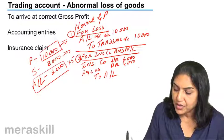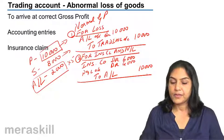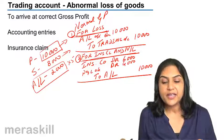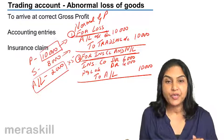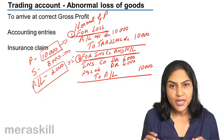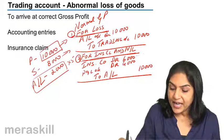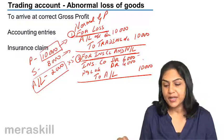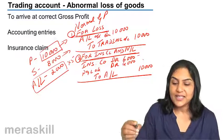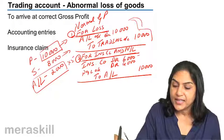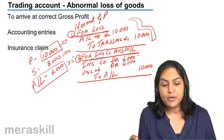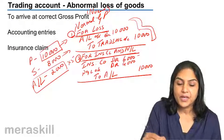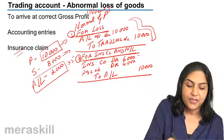So this would be the sequence of entries in case of abnormal loss of goods: abnormal loss account debit to trading account with the cost of the goods which have been lost. Then, insurance company account debit in case there is an insurance claim. Profit and loss account debit with the net loss to abnormal loss account 10,000. This entry is actually passed so that we ascertain the correct normal gross profit. Abnormal loss account is created so that we can arrive at the correct gross profit — the normal gross profit. These are the accounting entries including that of the insurance claim.